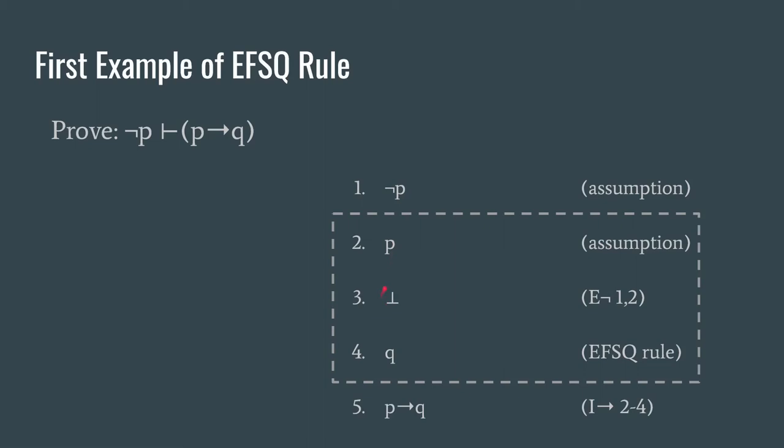Well from a falsum anything follows. That's just what our EFSQ rule says. So we have Q which is what we wanted, and then we can close off our box and write P→Q with our introduction of the arrow on lines two through four. So a very powerful rule here.